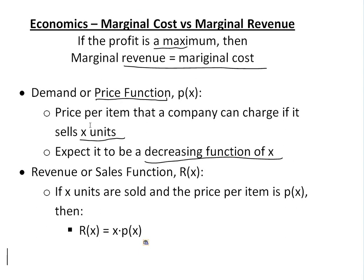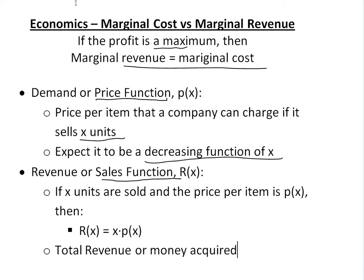Now given this definition of the price function, we have another definition: the revenue or sales function. The revenue is basically how much money you're going to bring in. The total revenue or money acquired when selling X amount of items is just those X items times the price function. So if you have a hundred items that each cost $10, you get $1,000 total revenue.